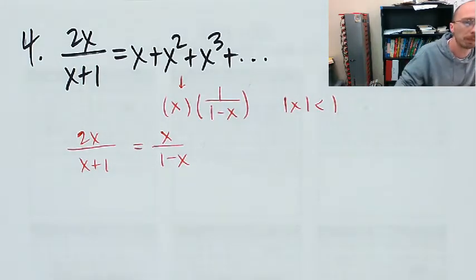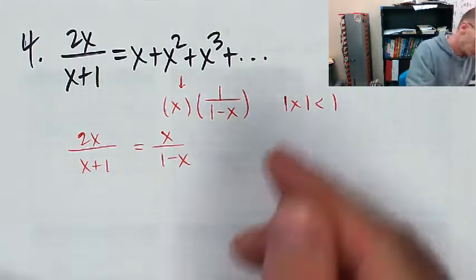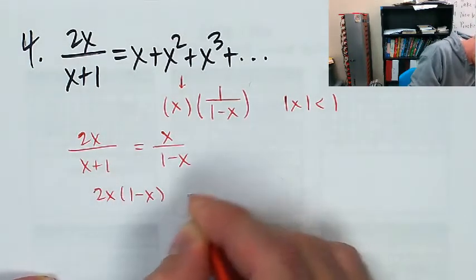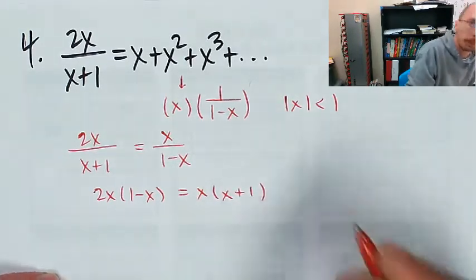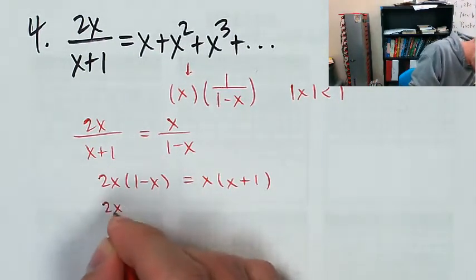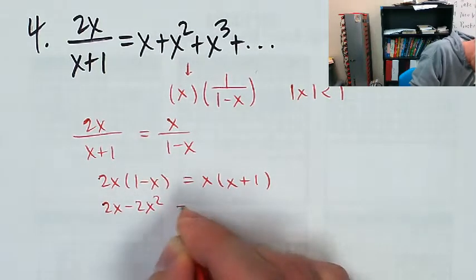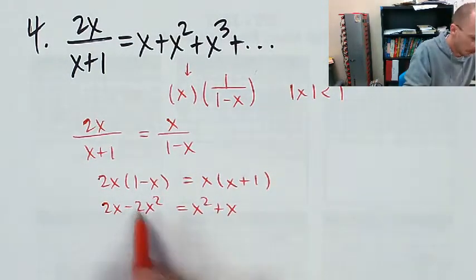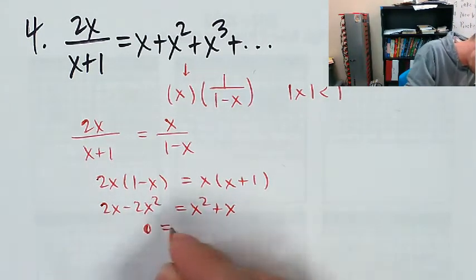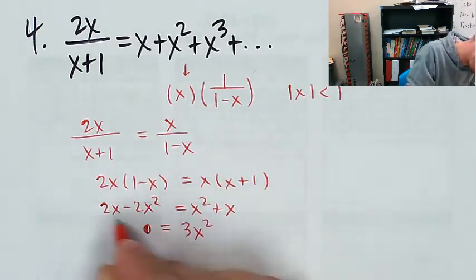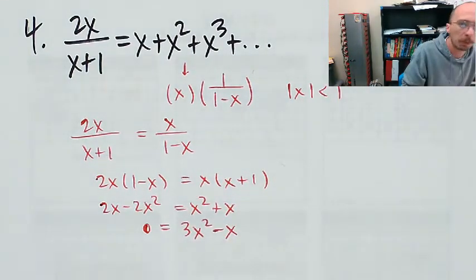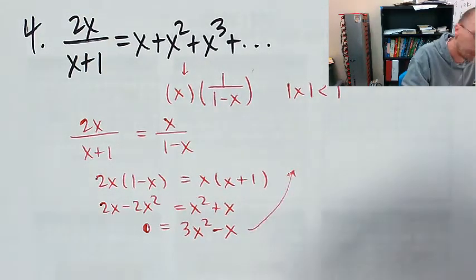Cross multiplying gives 2x times 1 minus X equals X times X plus 1. Distributing, I get 2x minus 2x squared equals x squared plus x. Setting this to zero, I subtract 2x from both sides and get 0 equals 3x squared minus x.